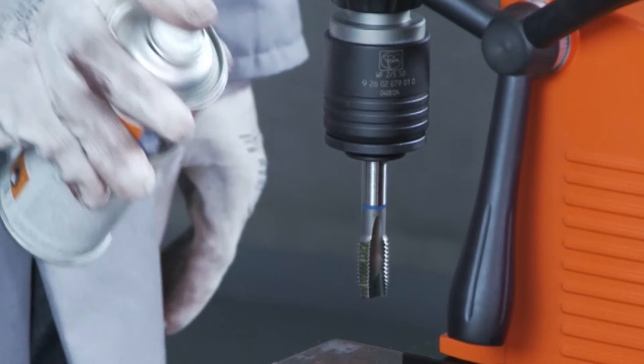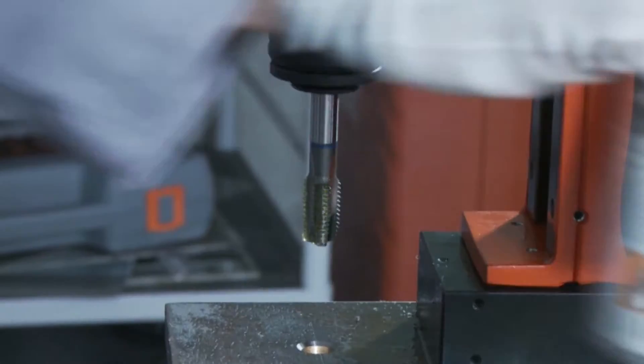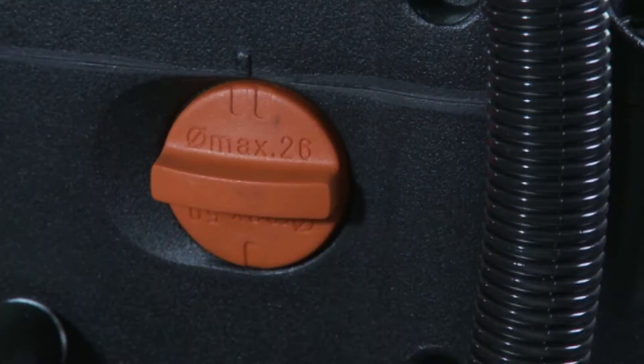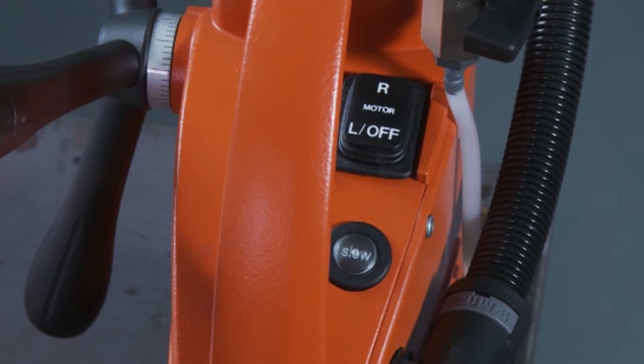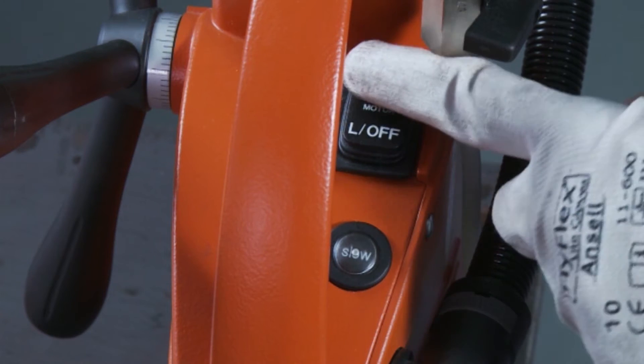Make sure that the core drilling unit is not connected to the power supply. Select gear setting 1 to tap the thread using low speed and high torque. Now connect the core drilling unit to the power supply.